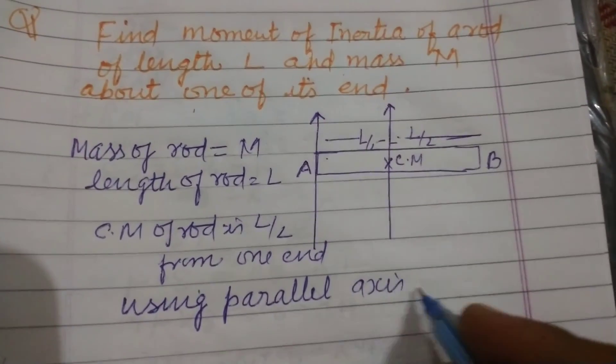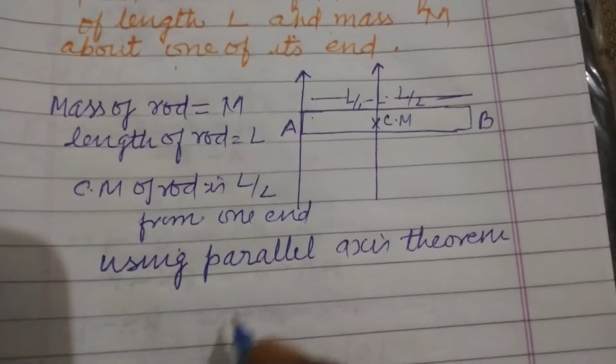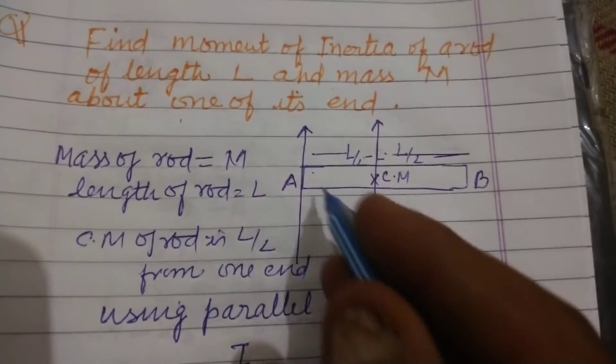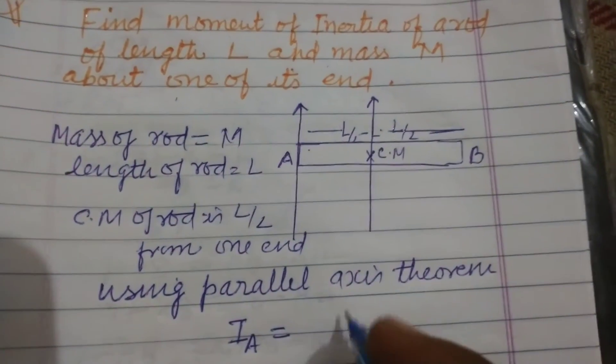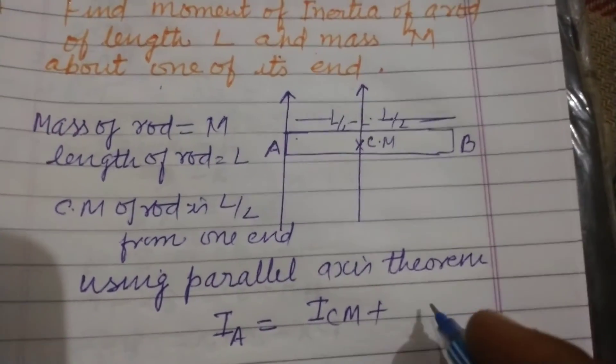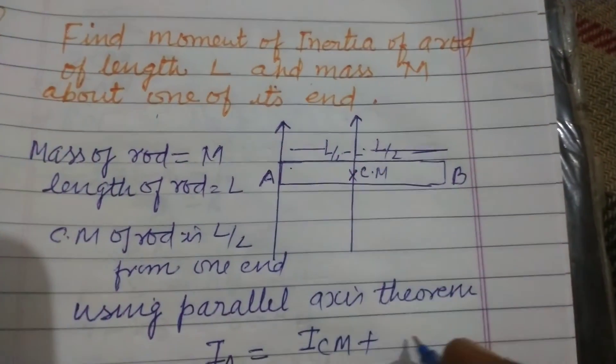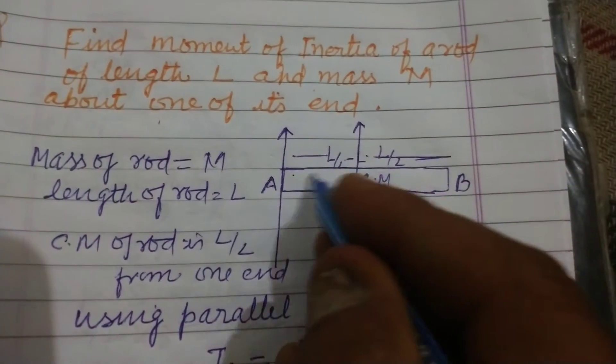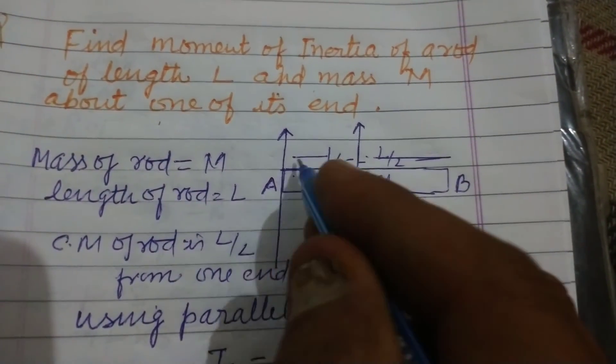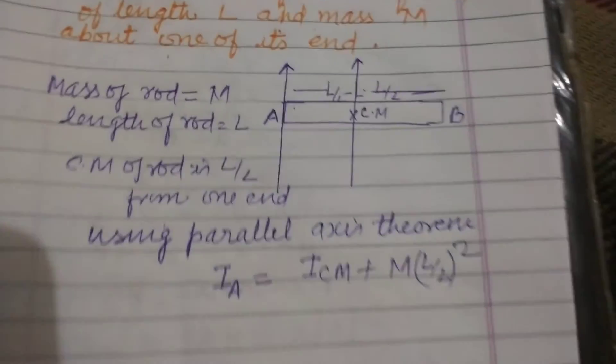Moment of inertia about A equals moment of inertia about center of mass plus M times distance from this axis to the center of mass, M(L/2) whole squared.